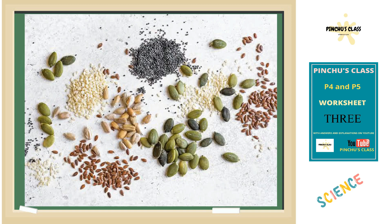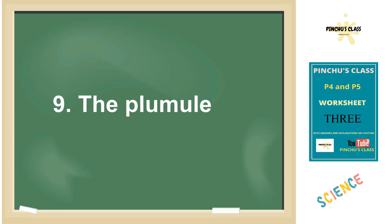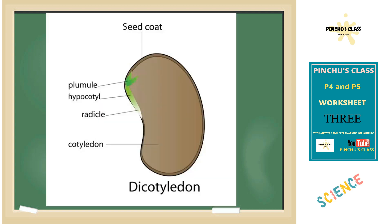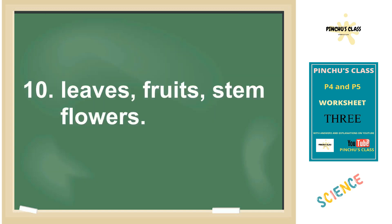Number nine: the part of a seed that grows into a shoot system is known as the plumule — you can see it in that diagram; it is known as the plumule.